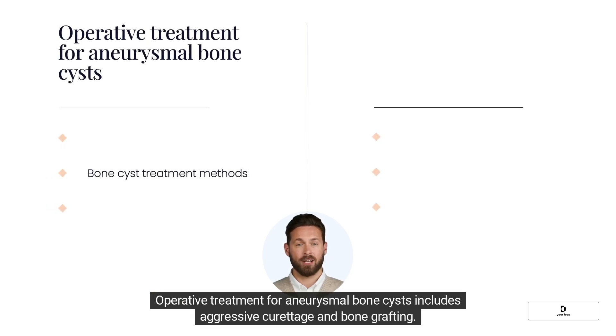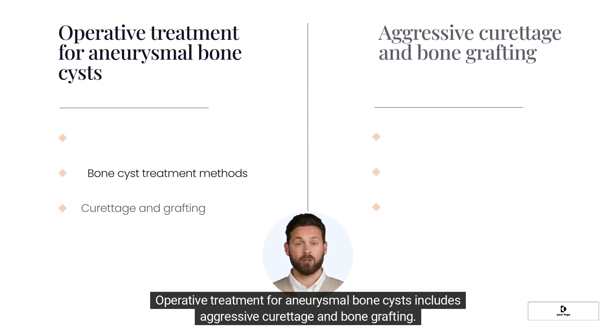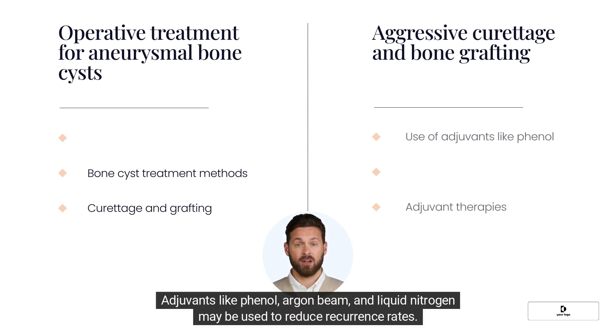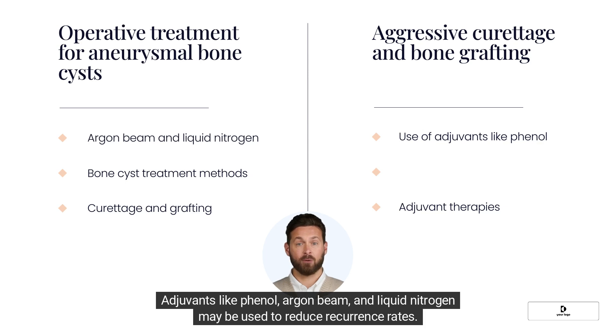Operative treatment for aneurysmal bone cysts includes aggressive curettage and bone grafting. Adjuvants like phenol, argon beam, and liquid nitrogen may be used to reduce recurrence rates.